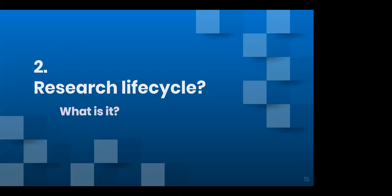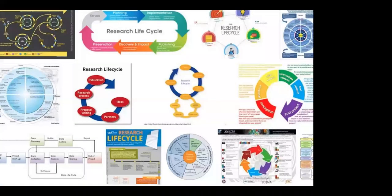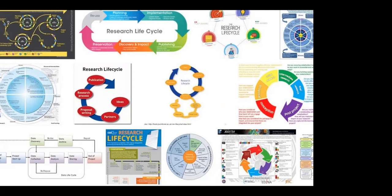So the research life cycle — what is it? I did a Google image search for research life cycle and you can see a whole bunch of different images. There are some things a lot of them have in common: they've got arrows, a lot of them are circular, they've got different pieces and components. Some use some of the same language, some are slightly different, but the point is that the research life cycle can take a lot of different forms. There are many types of research and many academic disciplines, and people do research differently.